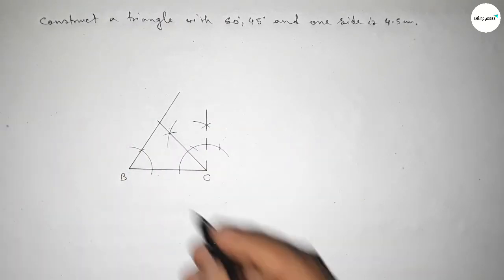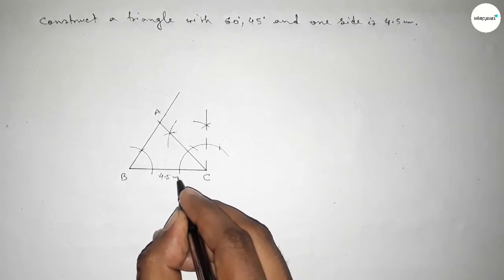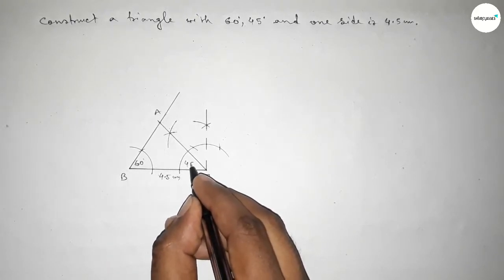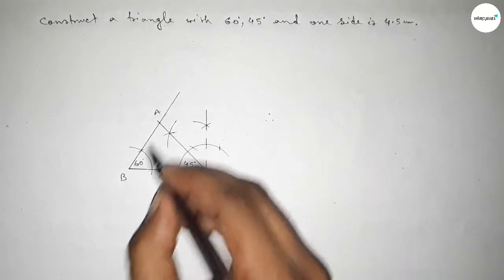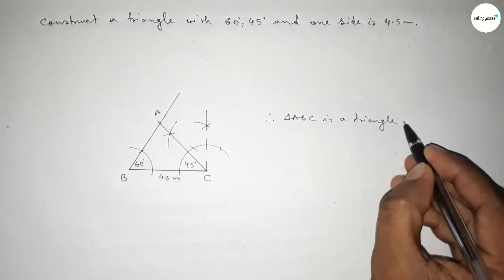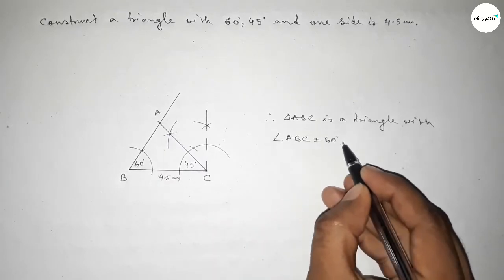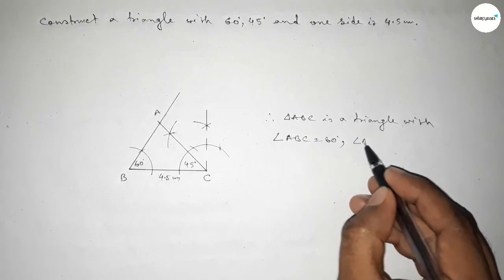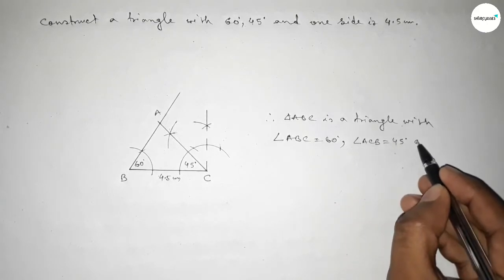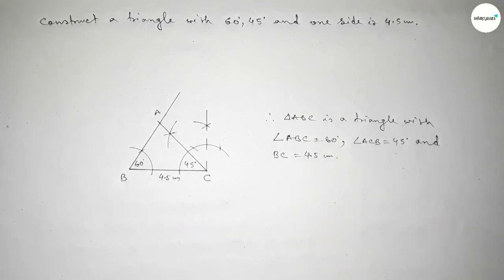Both lines intersect at a point. This side is 4.5 centimeters, this angle is 60 degrees, and this angle is 45 degrees. Therefore triangle ABC is constructed with angle ABC equal to 60 degrees, angle ACB equal to 45 degrees, and side BC equal to 4.5 centimeters. That's all — thanks for watching. If this video is helpful, please share it with your friends.